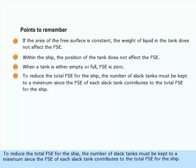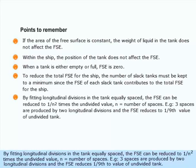To reduce the total FSC for the ship, the number of slack tanks must be kept to a minimum, since the FSC of each slack tank contributes to the total FSC for the ship. By fitting longitudinal divisions in the tank equally spaced, the FSC can be reduced to 1 over n-squared times the undivided value, where n is the number of spaces.